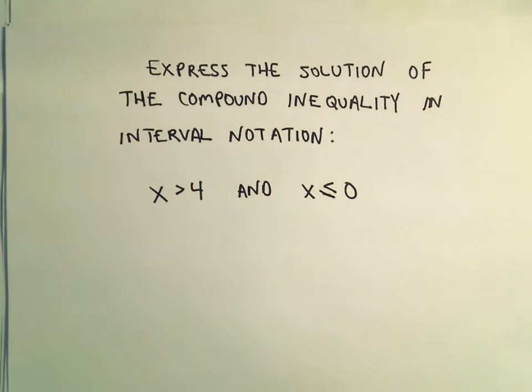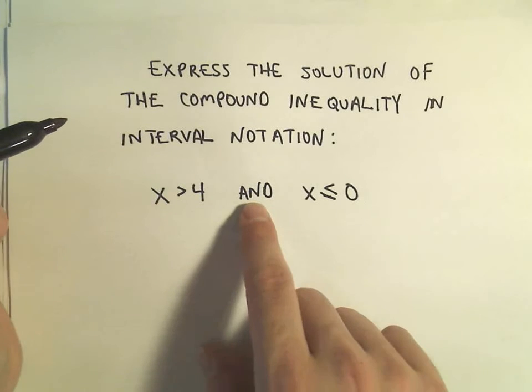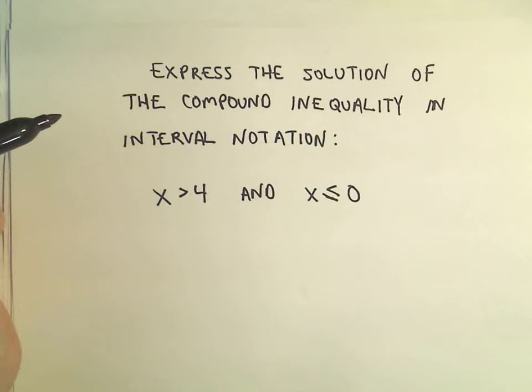So now the difference between this and maybe some of the other examples is we have to think of all numbers where x is greater than 4 and at the exact same time those numbers have to be less than or equal to zero, so think about what numbers satisfy that.